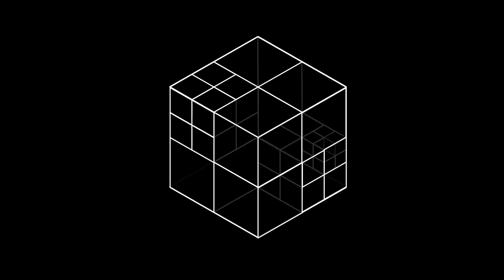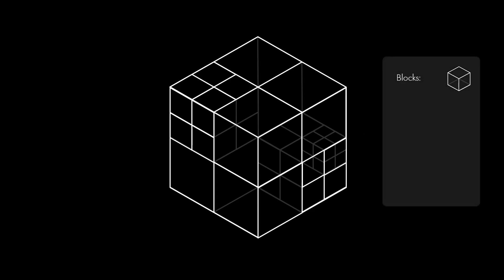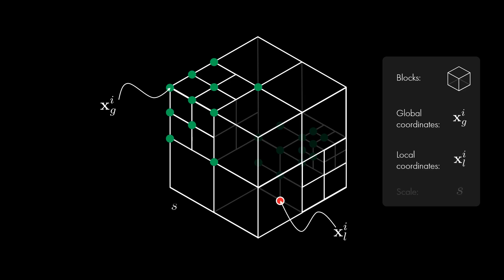ACORN optimizes a partition of space into non-overlapping blocks of different sizes, here illustrated in three dimensions. The optimization is not carried out a priori, but online while training, by feeding the training error back into an integer linear program that selects how to partition each block. Each block is uniquely identified with a global coordinate, and inside each block a point can be identified by local coordinates, thus every point in space belongs to a single block at a single scale.